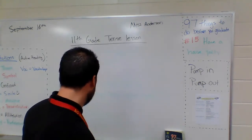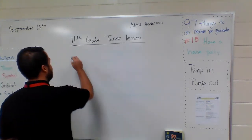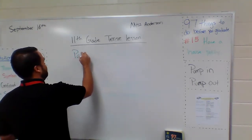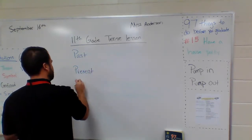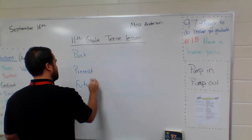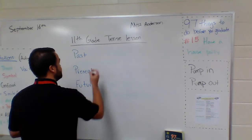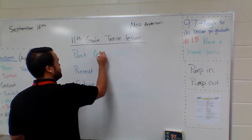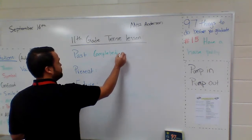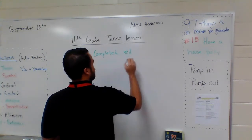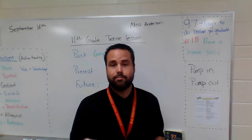There are three terms we want to start with. Verbs can be either past, present, or future. The past is something that's already completed — something done in the past. Oftentimes it is marked with '-ed.' So rather than 'play,' you'd say 'played.'